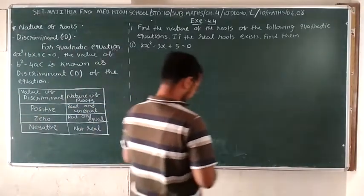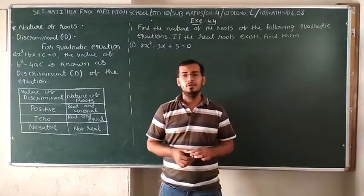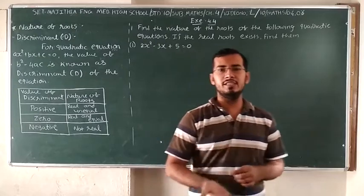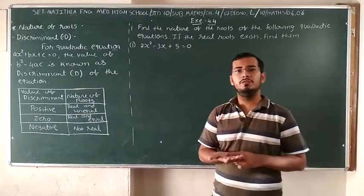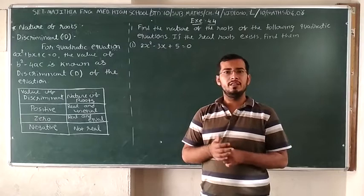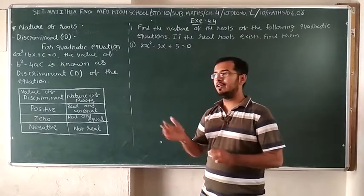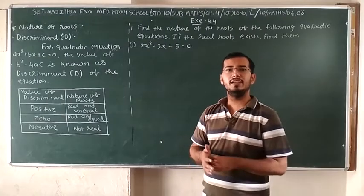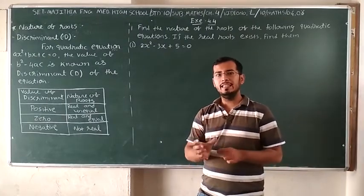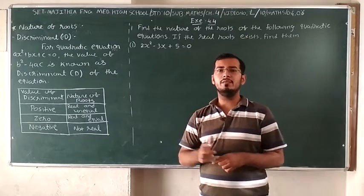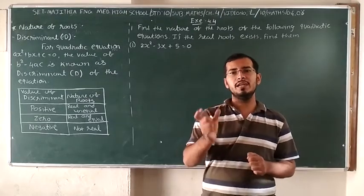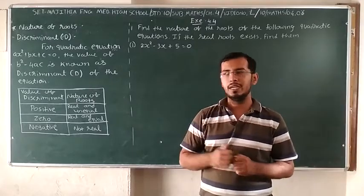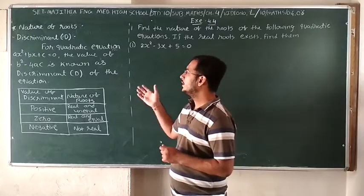Hello students. In this video we will learn about the nature of roots. Using the previous formula we can decide what is the nature of roots. We already talked about that — using the formula x is equal to minus b plus or minus root b squared minus 4ac upon 2a. In that root there is b squared minus 4ac. Using that b squared minus 4ac we have to decide what is the nature of roots.